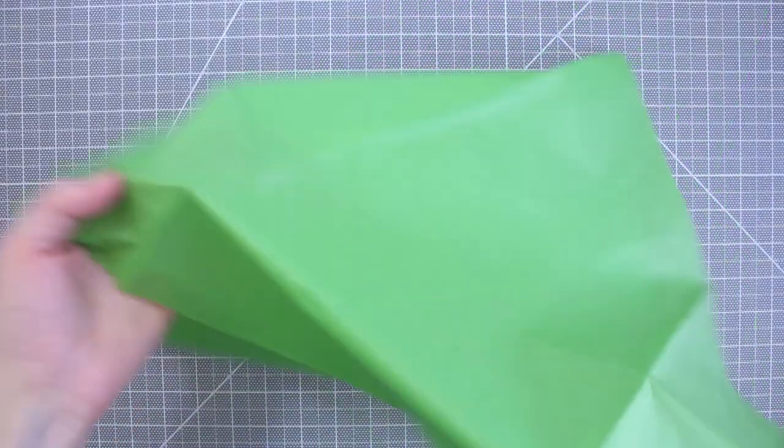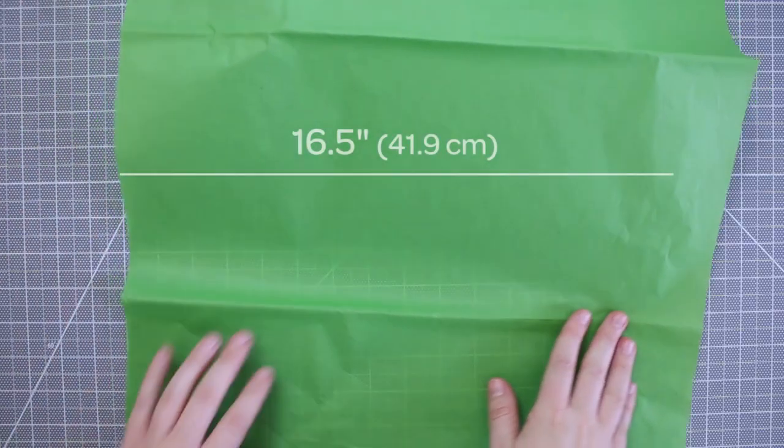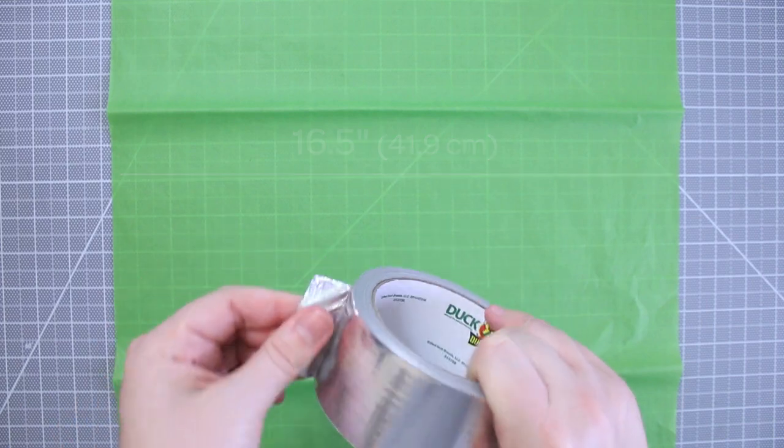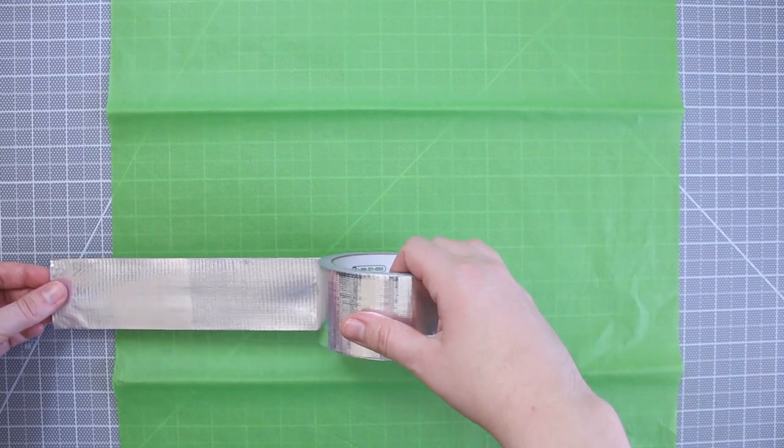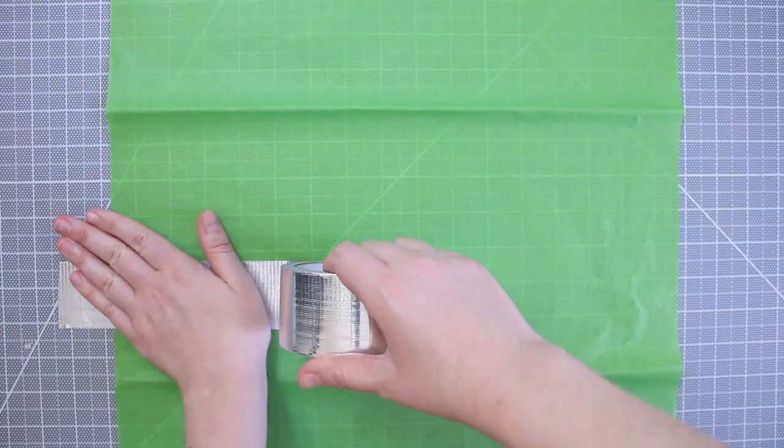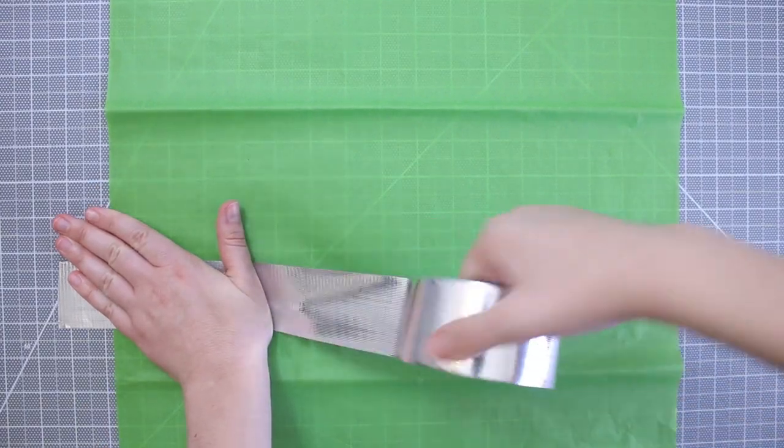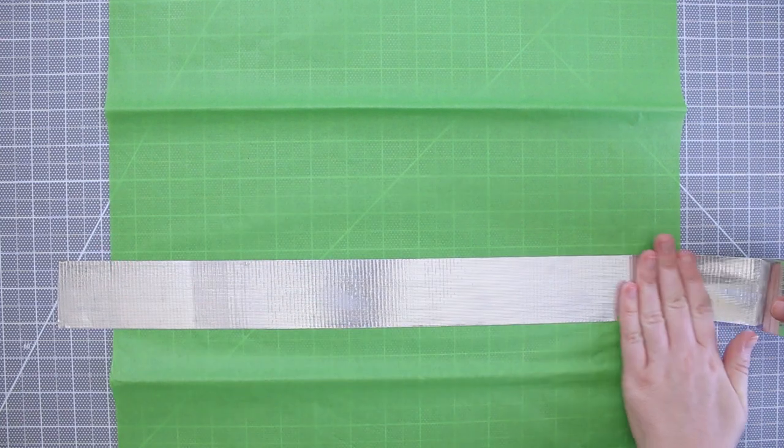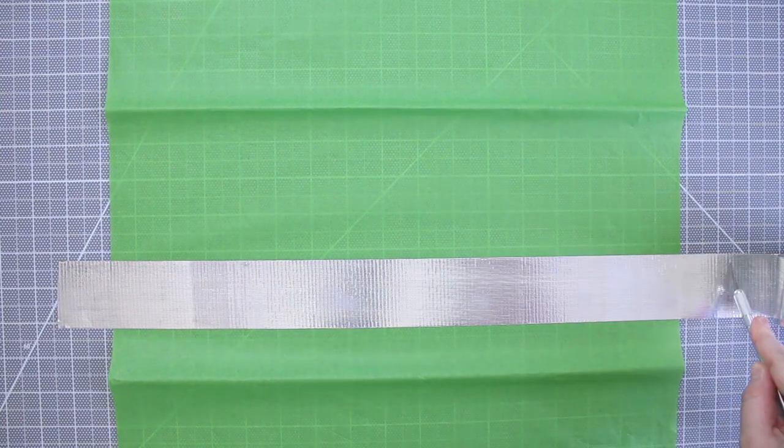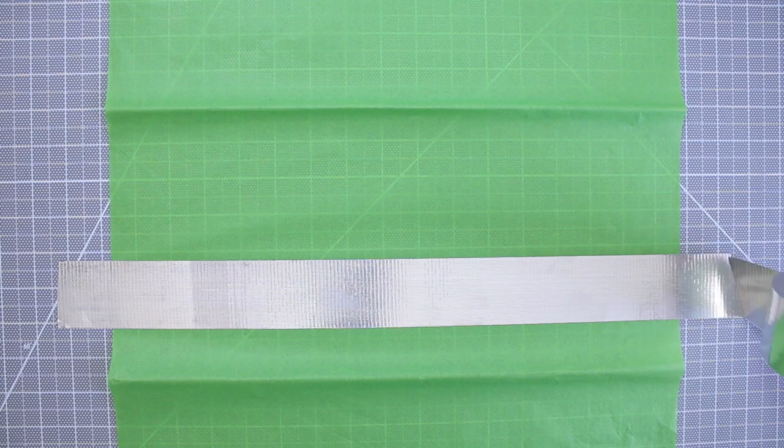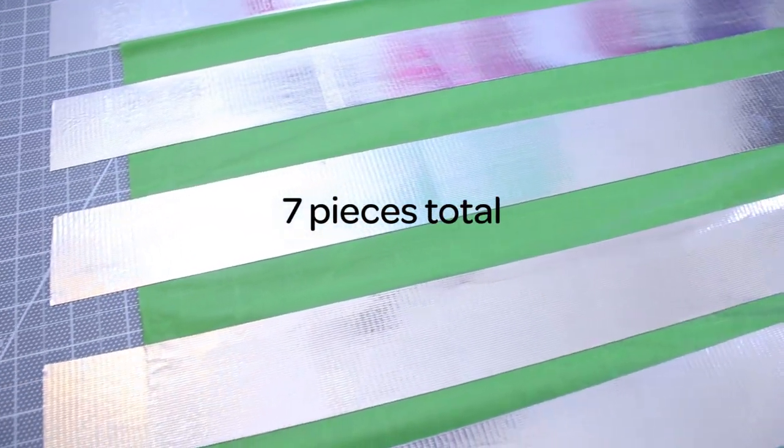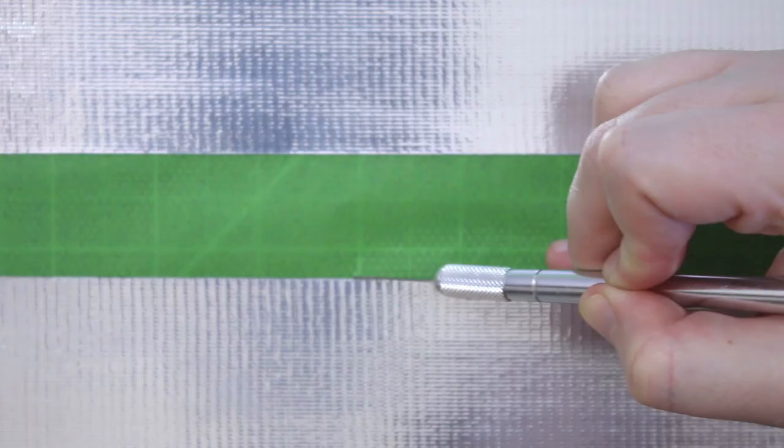First I'm using the shorter side of the tissue paper for the length of the tape. Then lay down a piece, leaving some left over on the ends. Make seven pieces total. Then cut off the excess tissue paper.